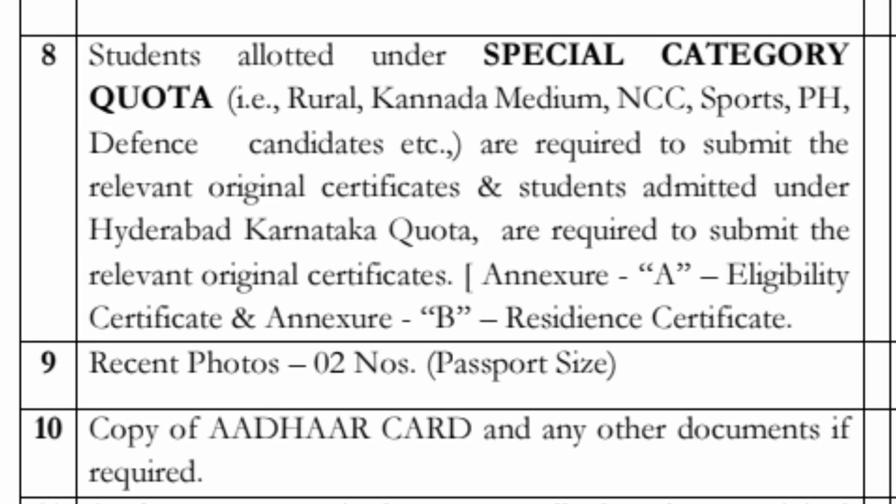Next is the special category certificate. For example, for the rural quota you need the rural certificate, for Kannada medium quota the Kannada medium certificate. If you are claiming NCC, sports, physically handicapped, or defense quota, different annexures A, B, C and the relevant certificates are required, which you have to prepare and provide at the time of joining.